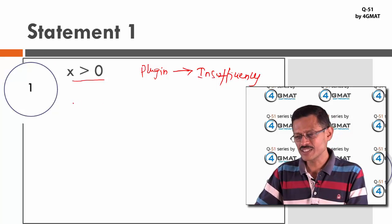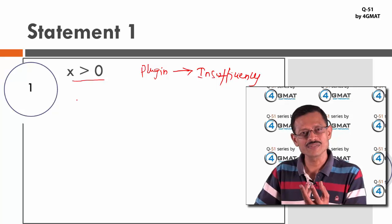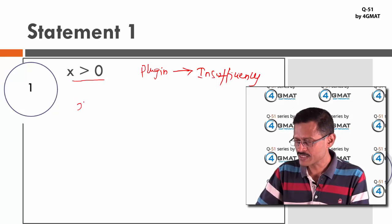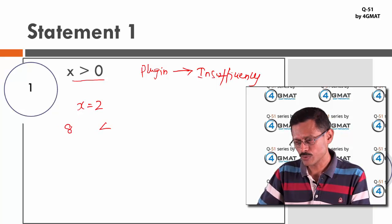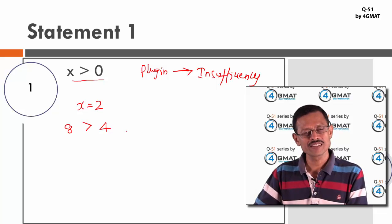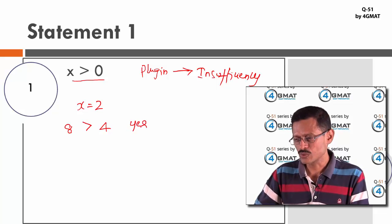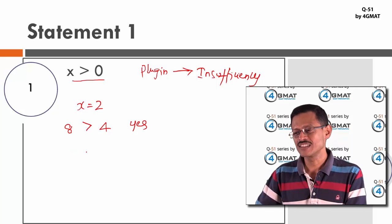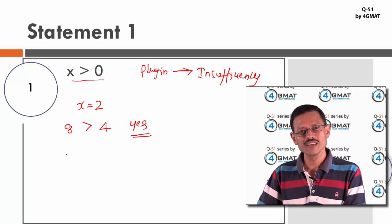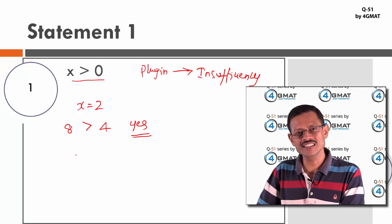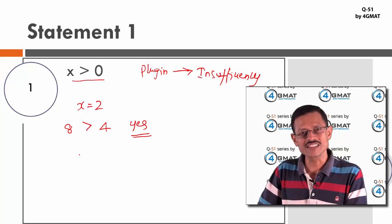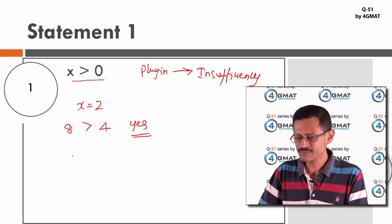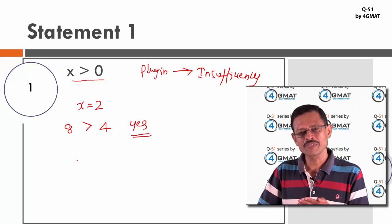Starting with the obvious: x = 2. Then x³ = 8 and x² = 4, so x³ > x² — the answer is yes. I've found one instance giving yes. Now I need to find another value where x > 0 but x³ is not greater than x², to show Statement 1 is insufficient.